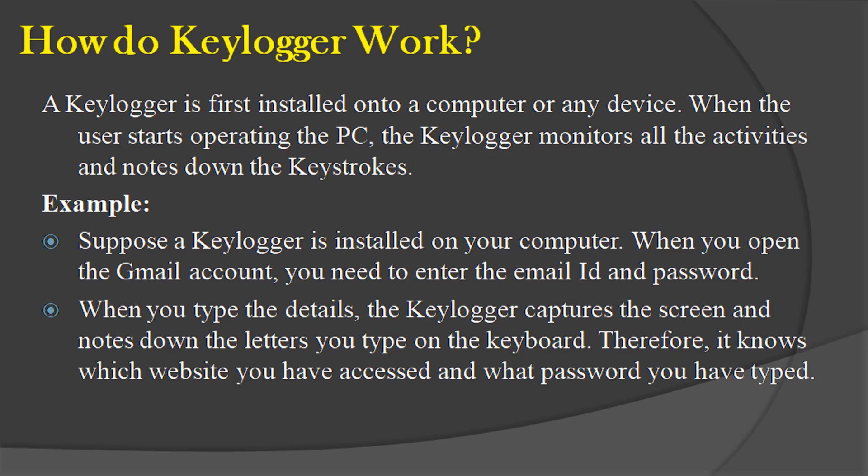How do Keyloggers work? A Keylogger is first installed onto a computer or any device. When the user starts operating the PC, the Keylogger monitors all the activities and notes down the keystrokes. Suppose a Keylogger is installed on your computer — when you open your Gmail account, you need to enter your email and password. When you type the details, the Keylogger captures the screen and notes down the letters you type on the keyboard. Therefore, it knows which website you have accessed and what password you have typed.